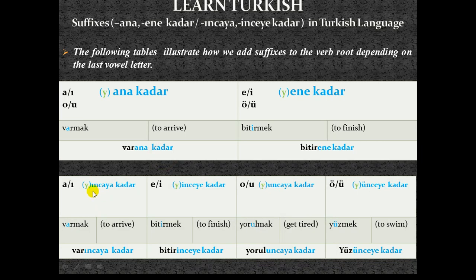For the second group, the suffixes are attached to the verb root as follows. If the last vowel is a or ı, we attach 'ıncaya kadar.' For example, 'varmak' (to arrive): since the last vowel is 'a,' we add 'ıncaya kadar' — 'varıncaya kadar.' Since the verb root does not end in a vowel letter, we omit the buffer letter 'y.' If the last vowel is e or i, we attach 'inceye kadar.' For example, 'bitirmek' (to finish) becomes 'bitirinceye kadar,' meaning 'until finish.'